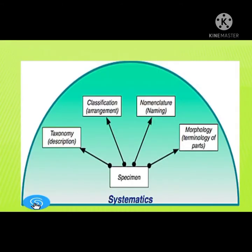In this specimen of systematics, the first step is taxonomy description. The second one is the classification arrangement. The third one is the nomenclature naming, and lastly, morphology — the terminology of parts.